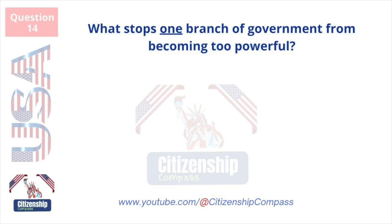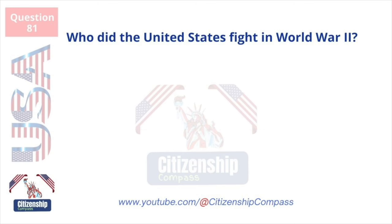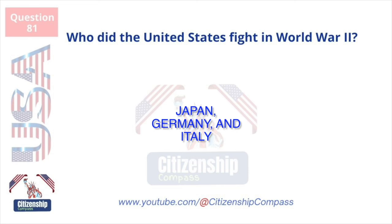What stops one branch of government from becoming too powerful? Checks and balances. Who did the United States fight in World War II? Japan, Germany, and Italy.